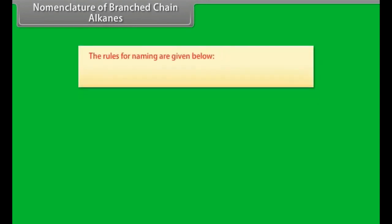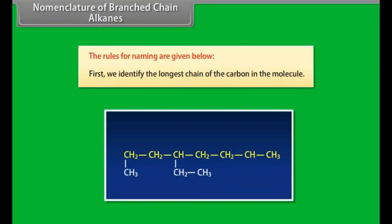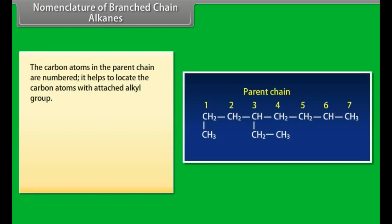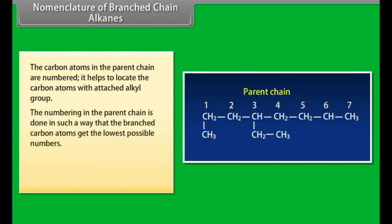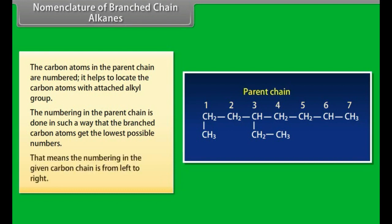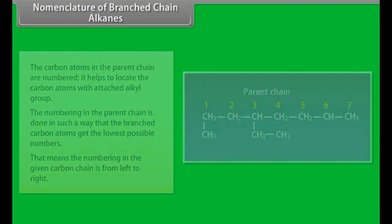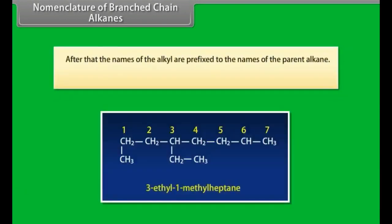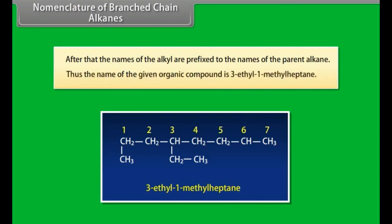Nomenclature of branched chain alkanes — rules for naming: first, identify the longest carbon chain in the molecule. The carbon atoms in the parent chain are numbered to locate the carbon atoms with attached alkyl groups. The numbering in the parent chain is done such that branched carbon atoms get the lowest possible numbers, meaning the numbering goes from left to right. The names of the alkyl groups are prefixed to the name of the parent alkane. For example, the name of the given organic compound is 3-ethyl-1-methyl-heptane.